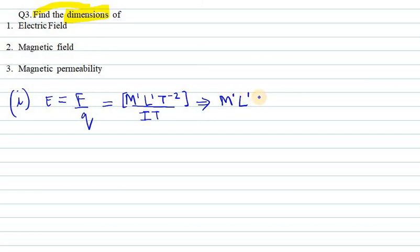I will be minus 1 because it will come over to the numerator. We have T minus 2 and at the bottom we have plus 1, so when plus 1 goes up it will become T raise to power minus 3.